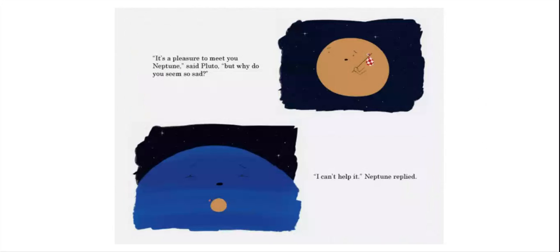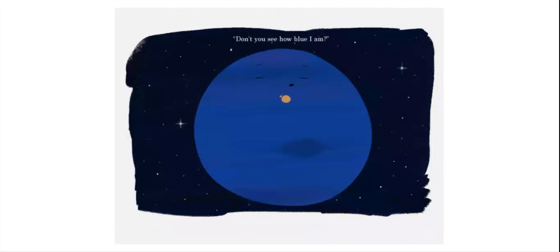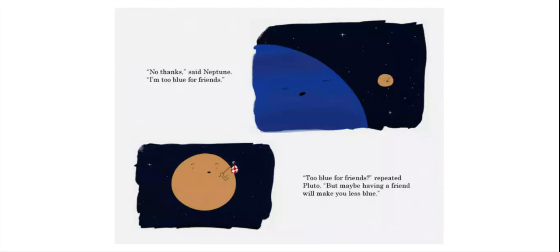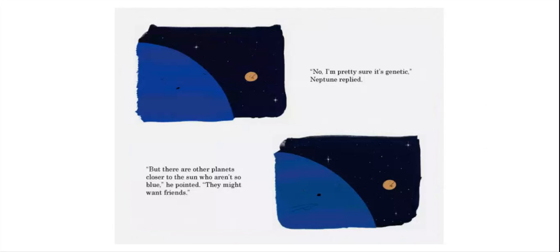I can't help it, Neptune replied. Don't you see how blue I am? You are pretty blue, said Pluto. Want to be friends? No thanks, said Neptune. I'm too blue for friends. Too blue for friends, repeated Pluto. But maybe having a friend will make you less blue. No, I'm pretty sure it's genetic, Neptune replied. But there are other planets closer to the sun who aren't so blue, he pointed. They may want to be friends.